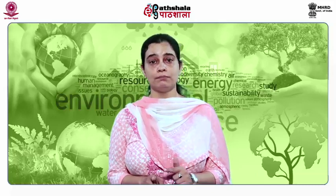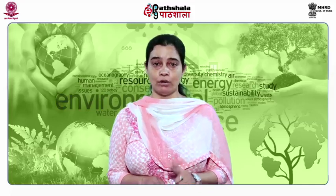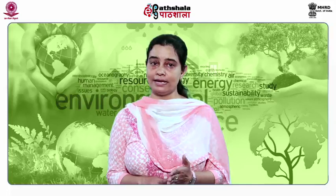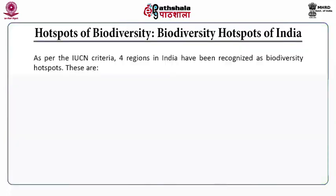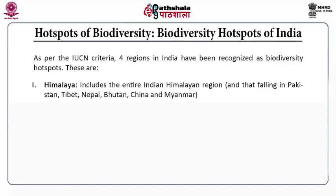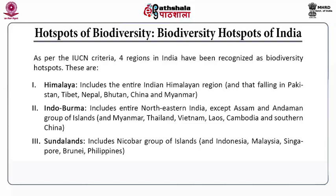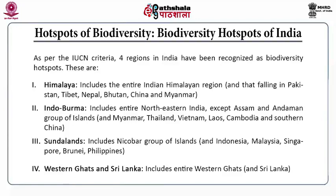Endemic plant species are those plant species that are unique to specific regions on earth. Approximately 43% of bird, mammal, reptile and amphibian species are characterized as endemic ones around the world. As per IUCN criteria — International Union for the Conservation of Nature — four regions in India have been recognized as biodiversity hotspots. These are: the Himalayas, which includes the entire Indian Himalayan region and extends into Pakistan, Tibet, Nepal, Bhutan, China and Myanmar; Indo-Burma, which includes the entire northeast region except Assam and the Andaman group of islands, and Myanmar, Thailand, Vietnam, Laos, Cambodia and southern China; Sundalands, which include the Nicobar group of islands and Indonesia, Malaysia, Singapore, Brunei and the Philippines; and Western Ghats and Sri Lanka, which include the entire Western Ghats and Sri Lanka.